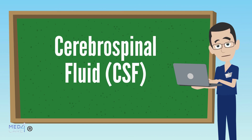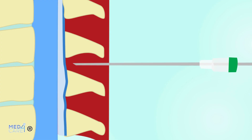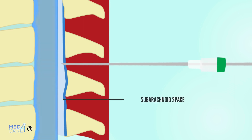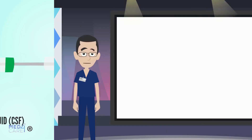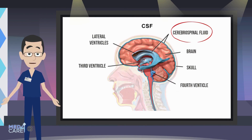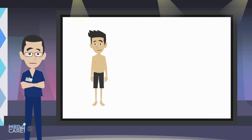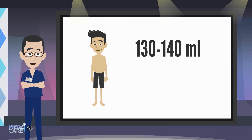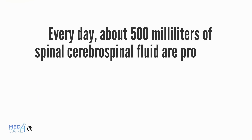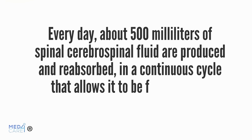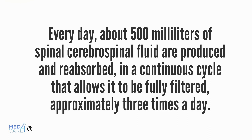Cerebrospinal fluid, CSF, is the target of anesthetic injection. In the case of spinal anesthesia, the drug is introduced into the subarachnoid space of the spine that houses the cerebrospinal fluid. It is a fluid in which the central nervous system — the brain and the spinal cord — are immersed. In an adult human organism, approximately 130 to 140 milliliters of cerebrospinal fluid is present. Every day about 500 milliliters of cerebrospinal fluid are produced and reabsorbed, in a continuous cycle that allows it to be filtered in full about three times a day.